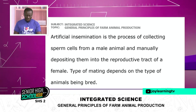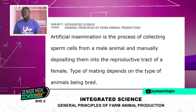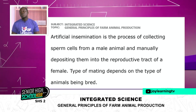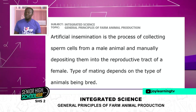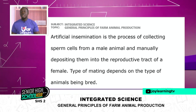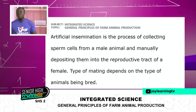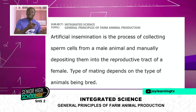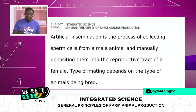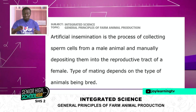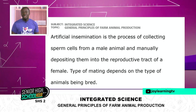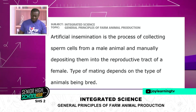The type of mating depends on the type of animals being bred. For artificial insemination, you need somebody who is trained — if you are not trained and you try doing it, the animal could get infections and can also die. You insert or deposit the sperm cells through a duct into the reproductive tract of the female.